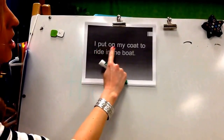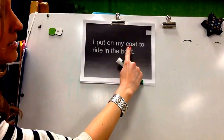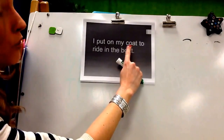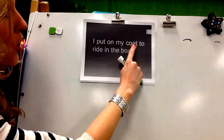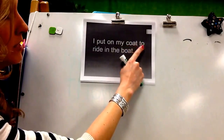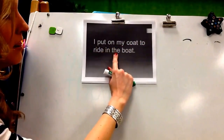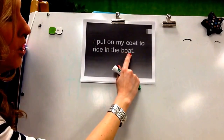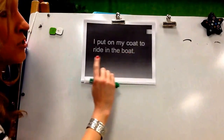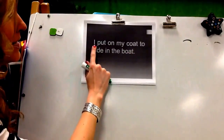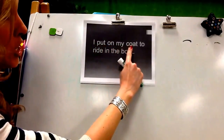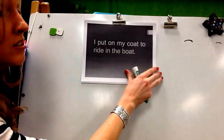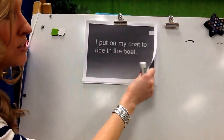I put on my — and right here I see O-A. So when I come to that, I'm going to say O: C-O-A-T, coat, to ride in the — and I see O-A again: B-O-A-T. So I'm going to reread that to make sure it makes sense: I put on my coat to ride in the boat. So when I saw O-A, I read it as O.